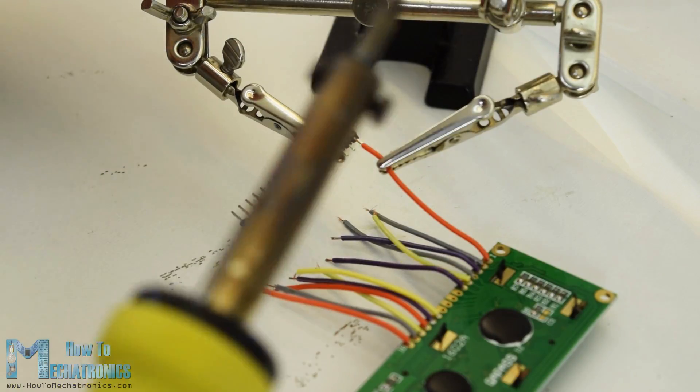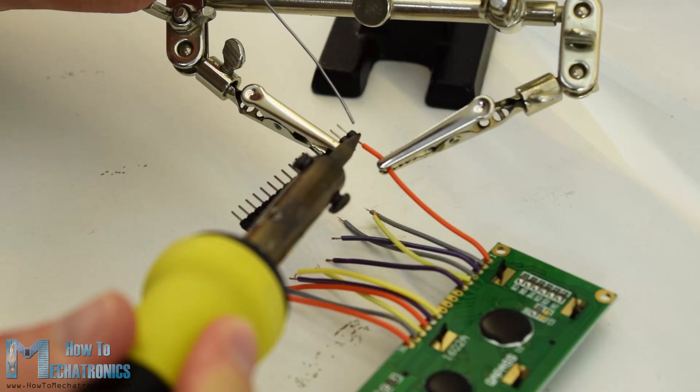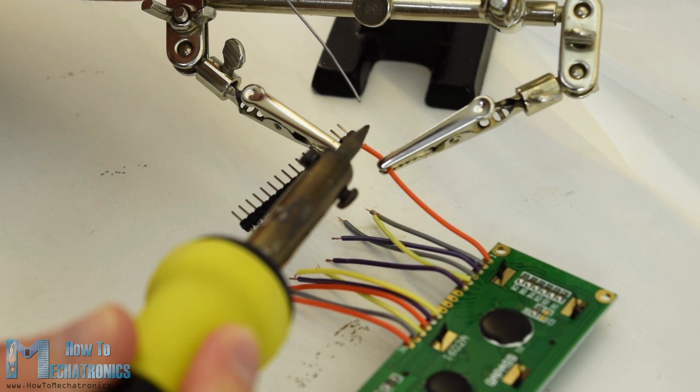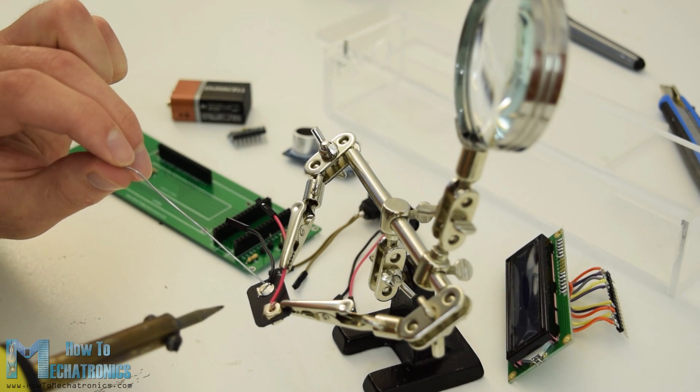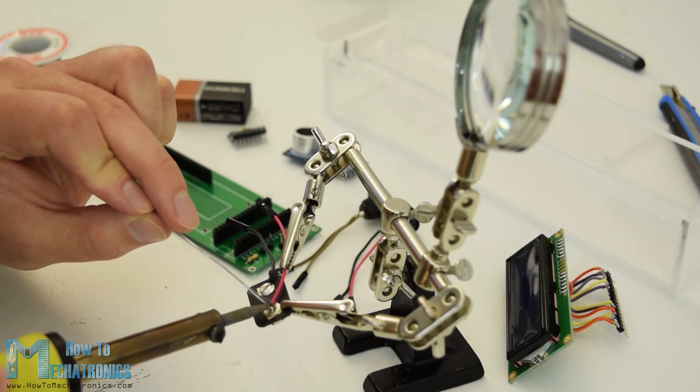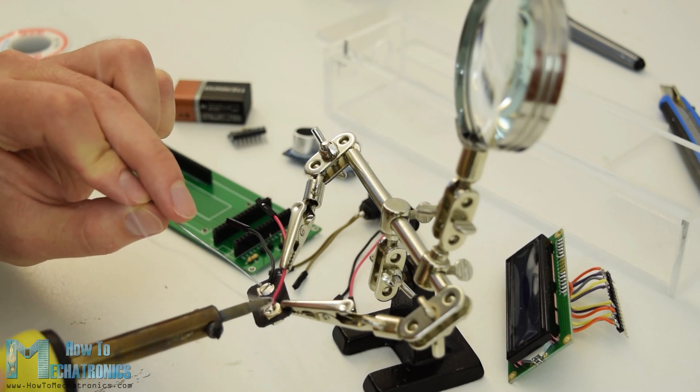The case is now ready so I continued with soldering the pin headers to the LCD so I can easily attach it to the PCB. I also soldered pin headers or jump wires to the power switch, the button, and the battery connector.